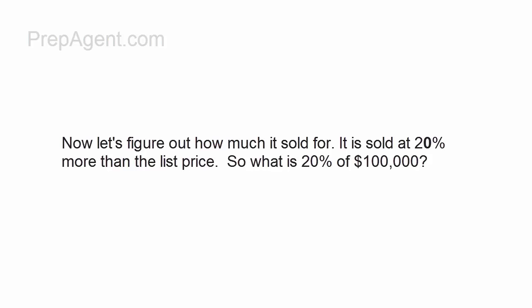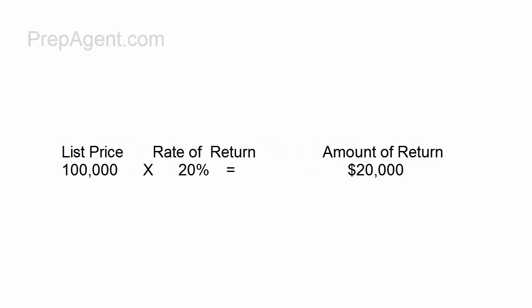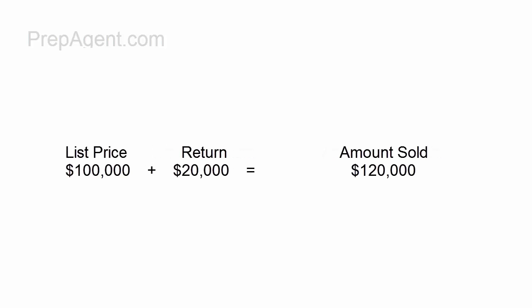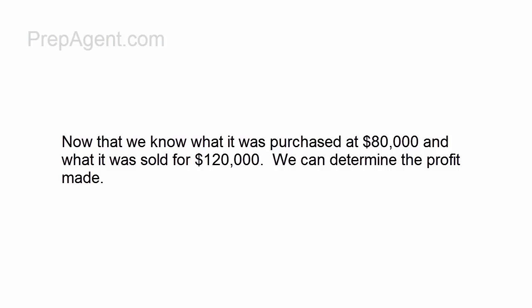Now let's figure out how much it sold for. It sold for 20% more than the listing price. $100,000 times 20% is $20,000. This time we add $20,000 to the list price of $100,000, and we get $120,000. So we know the purchase was $80,000 and the sale was $120,000.